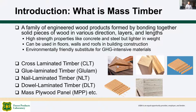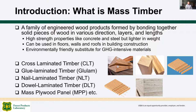Mass timber is a family of engineered wood products manufactured by bonding together solid pieces of wood in different directions, layers, and lengths. There are many different kinds currently available in the market — we are familiar with cross-laminated timber (CLT), also called glue-laminated timber, and there are others called nail-laminated, dowel-laminated, and mass timber plywood panel, among other categories.